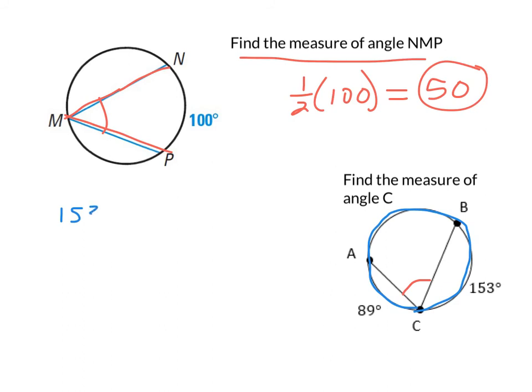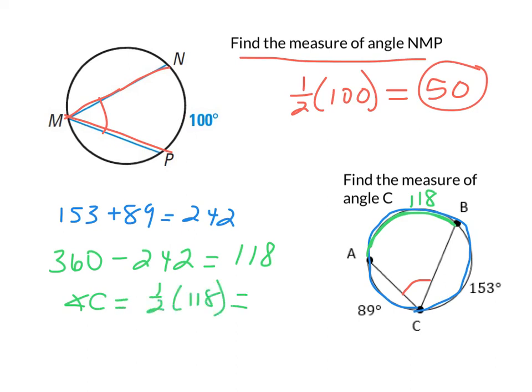So just to show my work here, 153 plus 89. The total of that when I add them up is 242. So whatever is left over of this circle will give us arc AB. All right. So 360 total degrees in a circle. When we subtract out the 242, what that's going to give us is 118. So now I know that arc AB is 118. I can now find angle C because I know that the angle is half the arc. So angle C is going to be half the arc, and that arc is 118. And when you cut 118 in half, you get 59 degrees.